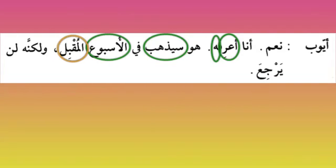He replies: 'naam, ana 'arifuhu' — yes, I am aware of it, I know him. 'Arifuhu' — 'huwa' is your maf'ulun bihi — 'sa yadh-habu' — 'sa' is harful istiqbal and it is fi'l mudari — so I know him and he is going 'fil usbu'il muqbil' — in the following week — 'al-usbu' is not and 'al-muqbil' is your na't.